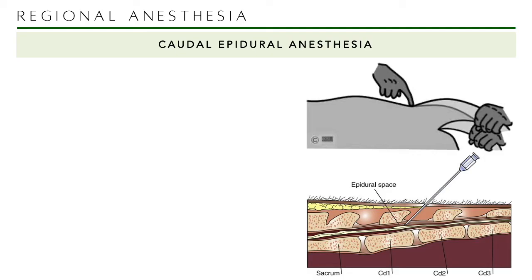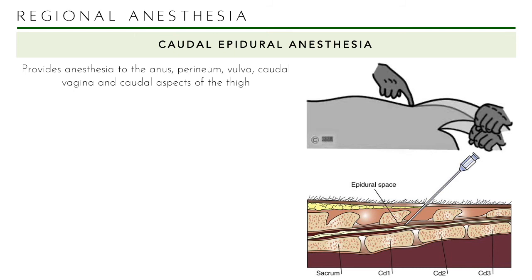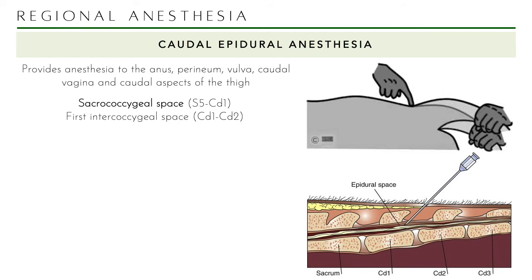If you need a bigger space for surgery, or if you're doing surgeries on the anus, perineum, vulva, caudal vagina, or caudal aspects of the thigh, caudal epidural anesthesia is the way to go. You have to locate two spaces: the sacrococcygeal space, between the fifth sacral vertebra and the first caudal vertebra; or the first intercoccygeal space, between the first and second caudal vertebrae. In bigger animals like cattle and horses, the sacrococcygeal space is bigger. For small ruminants, you could use either.